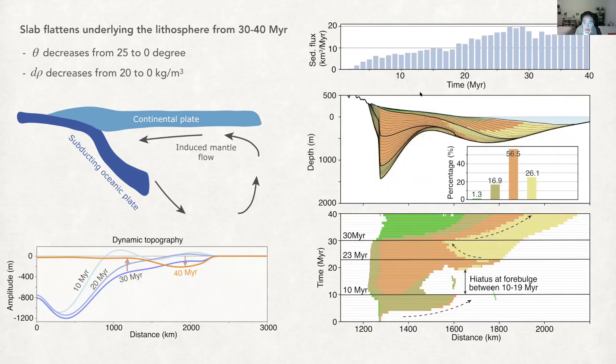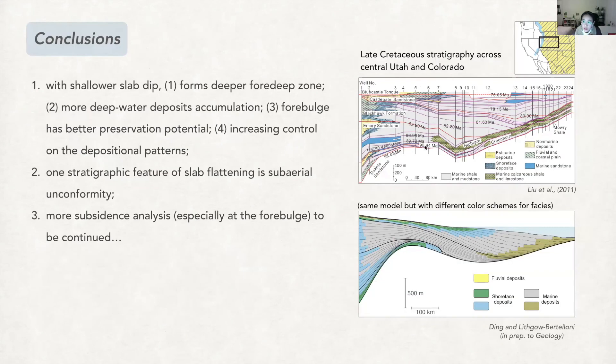And then we reconstruct the stratigraphic record. It shows the foredip zone is being uplifted because of the rebound and it forms an erosion surface. And also from 30 to 40 million years, there are more deep water sediments deposited and also more sediments at the back bulge with a progradational trend. And also this scenario can be closely compared with the Western Interior Seaway sedimentation history in Late Cretaceous.